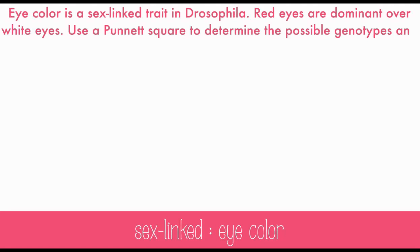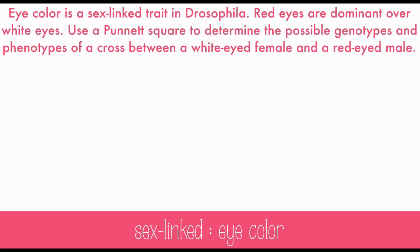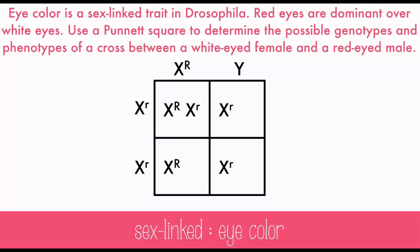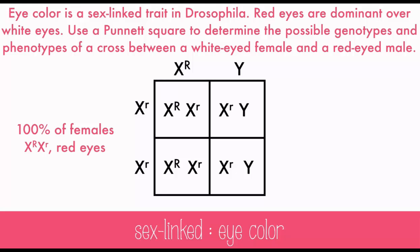Eye color is a sex-linked trait in Drosophila, a type of fly. Red eyes are dominant over white eyes. Use a Punnett Square to determine the possible genotypes and phenotypes of a cross between a white-eyed female and a red-eyed male. The male has the dominant red-eyed gene, and since white eyes are recessive, the female must have two white-eye alleles. Setting up the cross shows two possibilities: all of the females will be heterozygous with red eyes, and all of the males will be white-eyed.